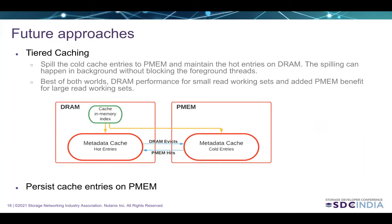That was one approach to using PMEM. There are several other approaches as well. One is tiered caching, where we maintain hot cache entries on DRAM and spill cold entries to PMEM. Whenever there is an eviction from DRAM, we spill that entry to PMEM in the background so we don't block foreground threads. This gives us the best of both worlds: DRAM-like performance for small working sets and added PMEM benefits for large working sets. Another approach is to persist cache entries on PMEM so we don't have to rebuild the cache across service restarts, avoiding cache warm-up time.